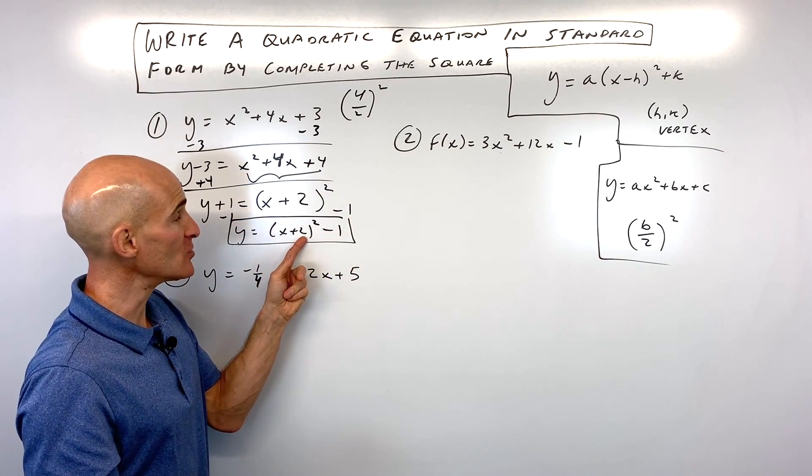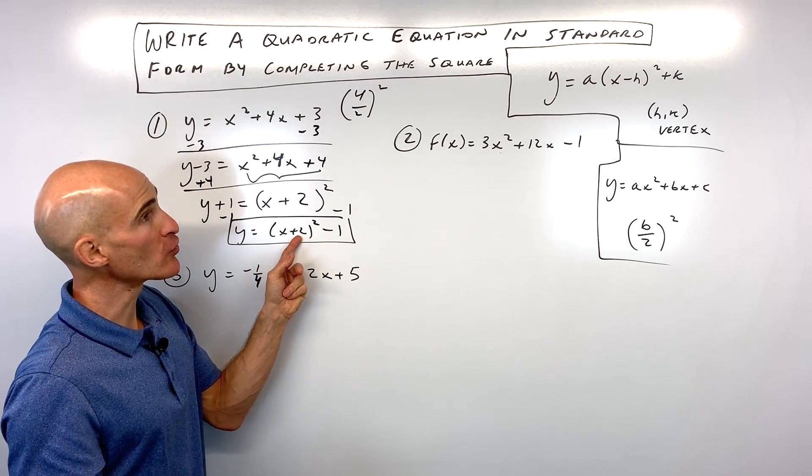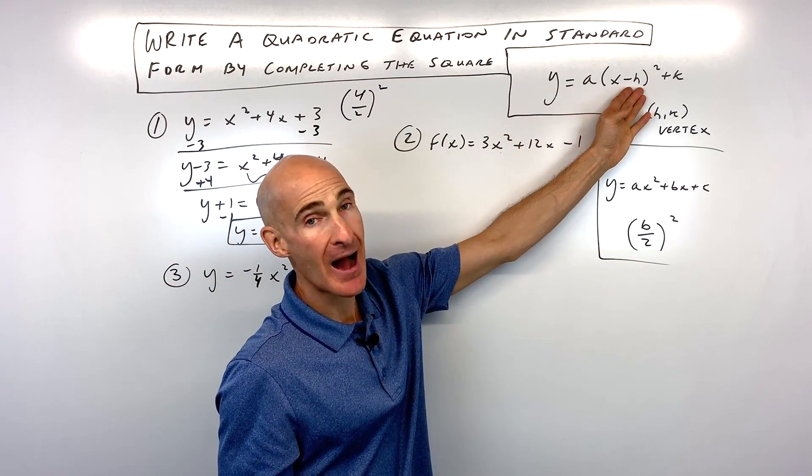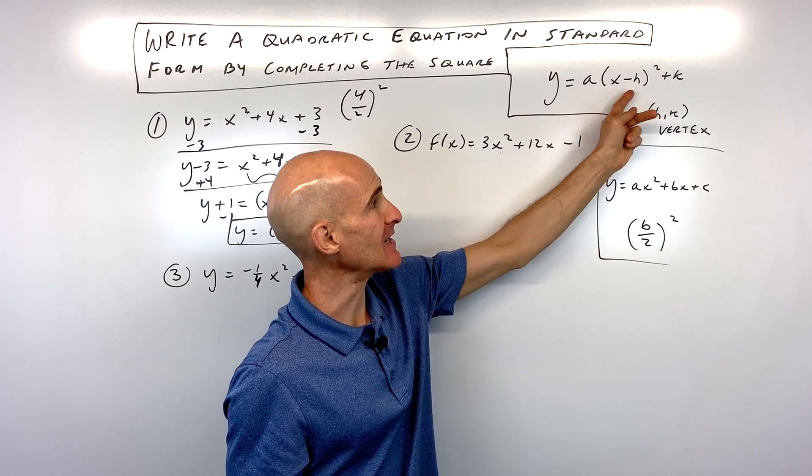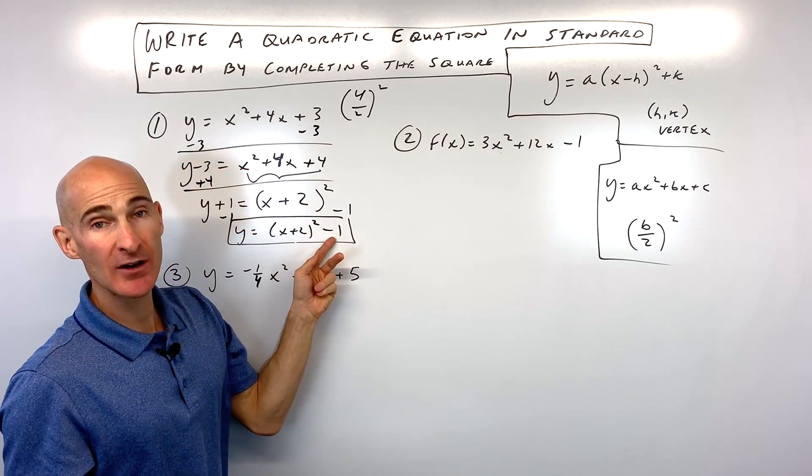And you can see the vertex is going to be negative 2, negative 1. Remember the one grouped with the x, it's going to have the opposite sign because this is x minus h. So the vertex negative 2, negative 1, and you got it.